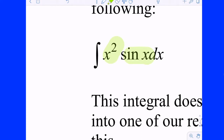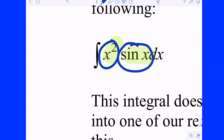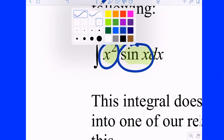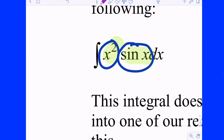This is going to be a perfect example for what's known as integration by parts. The telltale sign: you have one function that's a polynomial, and the other factor is typically either a sine, cosine, or an exponential. Basically, one of those factors is one you know how to take the derivative of, and you know how to find the integral of the other.